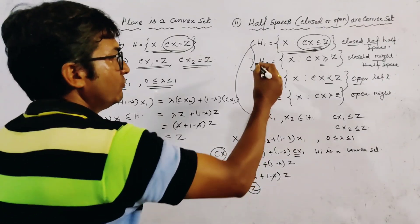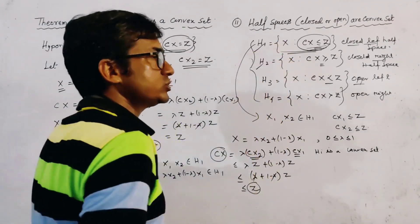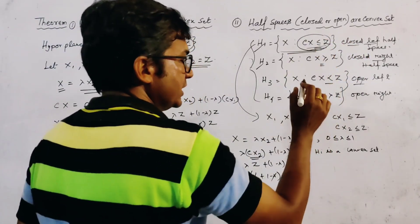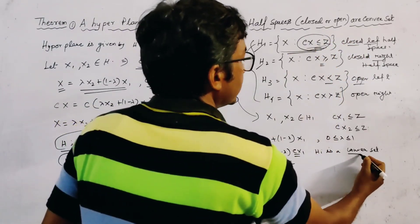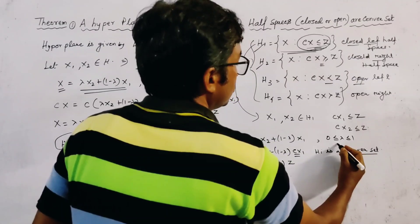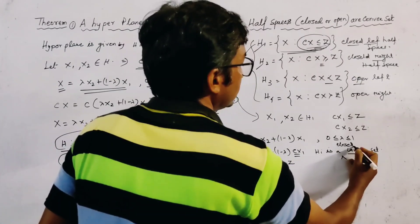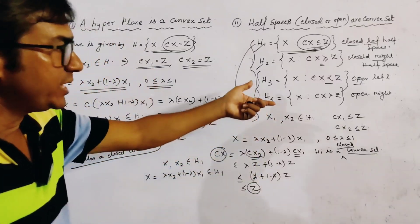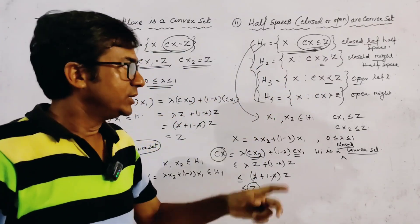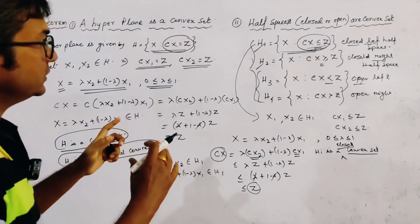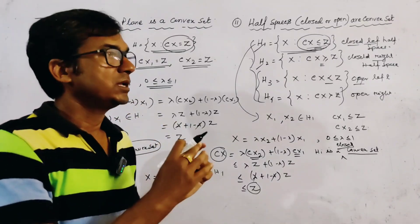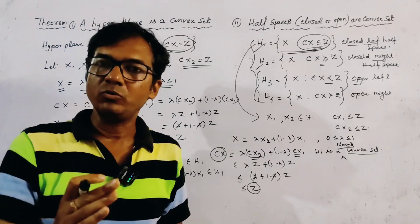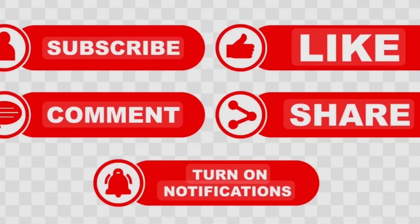All the proofs for the other half spaces are similar to the first one. For the first two sets — closed left and closed right half spaces — these are not only convex sets but closed convex sets. The open half spaces are obviously not closed convex sets. That concludes today's class, and this class is very important for your exam. Thank you for watching.